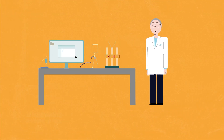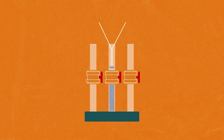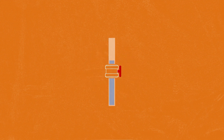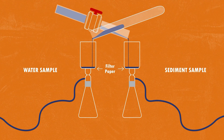We'll start by looking at the special analytical method we've developed for measuring microplastics. To analyse microplastics we first need to isolate them from our samples. If the sample is a solid, like sand or sediment, we use a special extractor to float the plastic particles to the surface of a dense salt solution. If the sample is a water sample, it can be directly filtered.